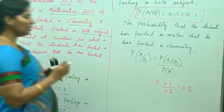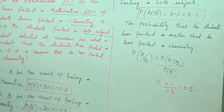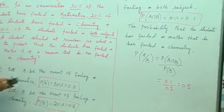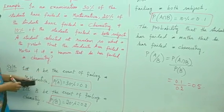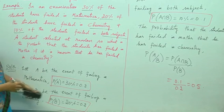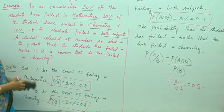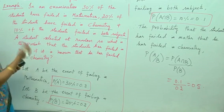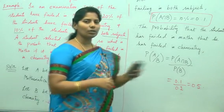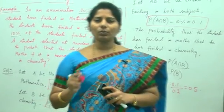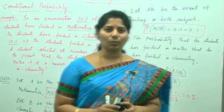This is how you will find out. Now, even you can write it as let A be the event of failing in chemistry and let B be the event of failing in mathematics. You can even change the events also. But accordingly, you should take the conditional probability. This is how you need to find the conditional probability.